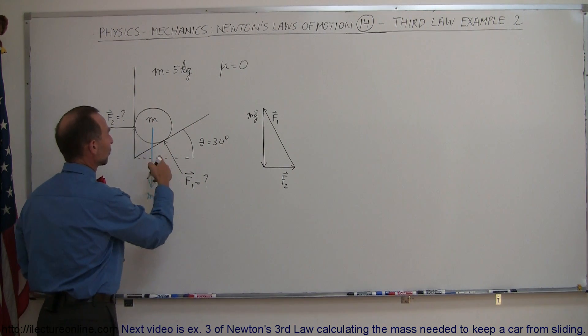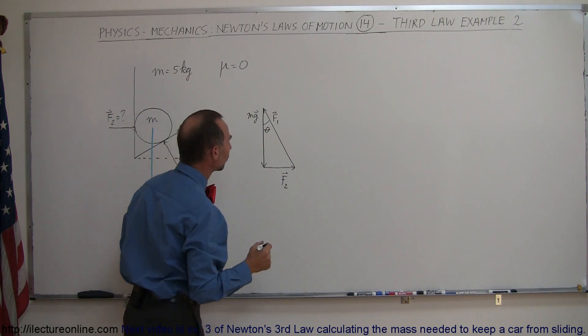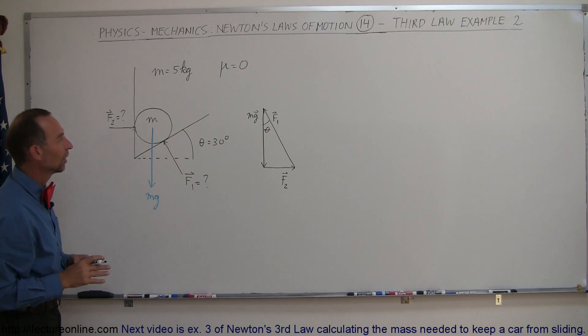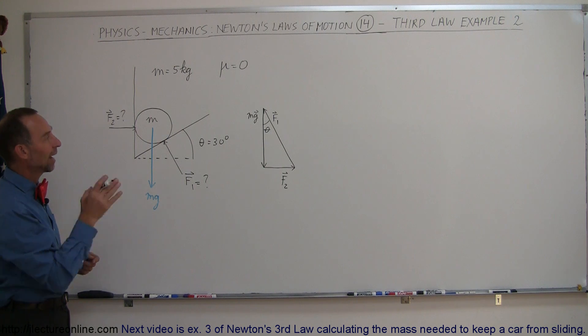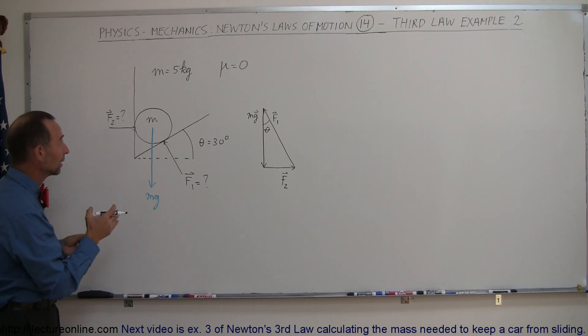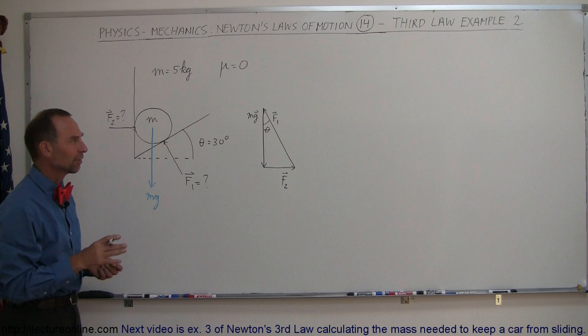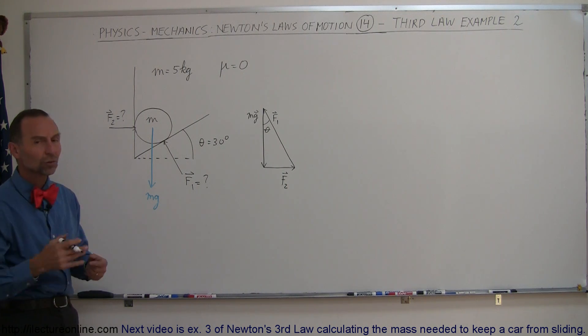If this angle here is 30 degrees, that means this angle right here must also be 30 degrees, so that's theta as well. Notice that F1 is the hypotenuse of this triangle, and F2 is the opposite side to the angle. Mg is a known quantity if we know the mass is 5 kilograms, so we should be able to figure out F1 and F2 using trigonometry.